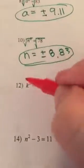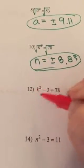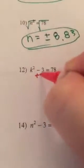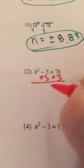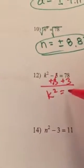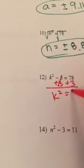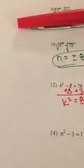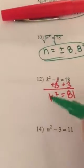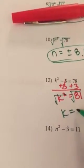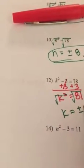On problem 12, we have a minus 3 that's attached to the k squared. To undo it, I'm going to add 3 to both sides. k squared equals 81. Can't multiply or divide, k squared is by itself, so I square root it, and k equals plus or minus 9.